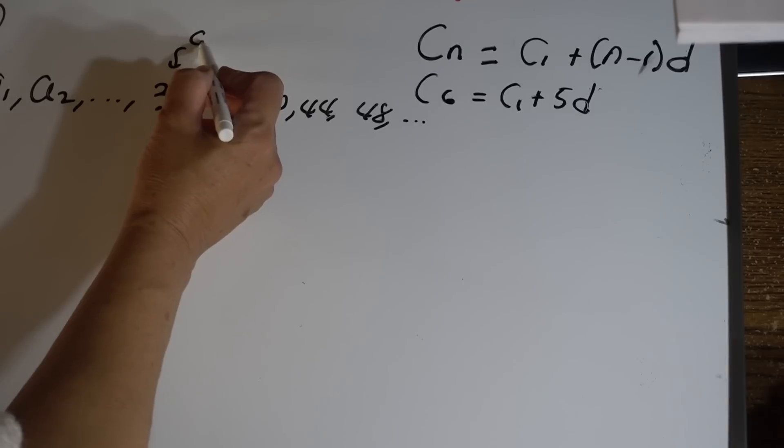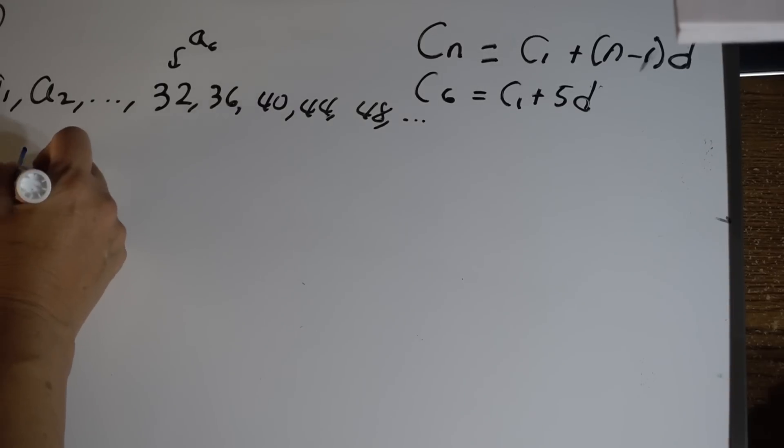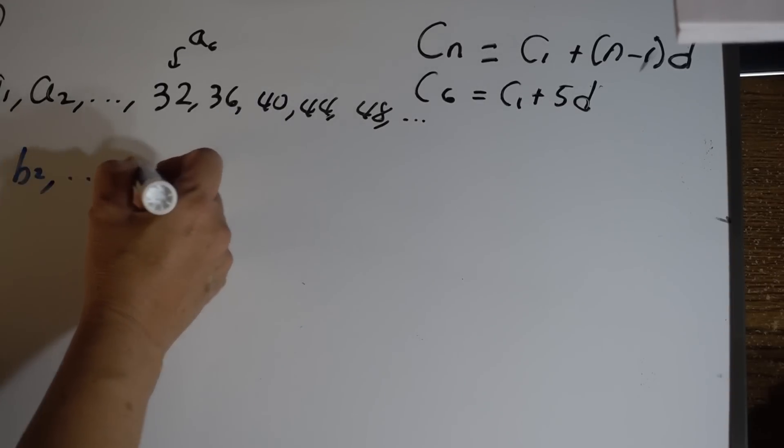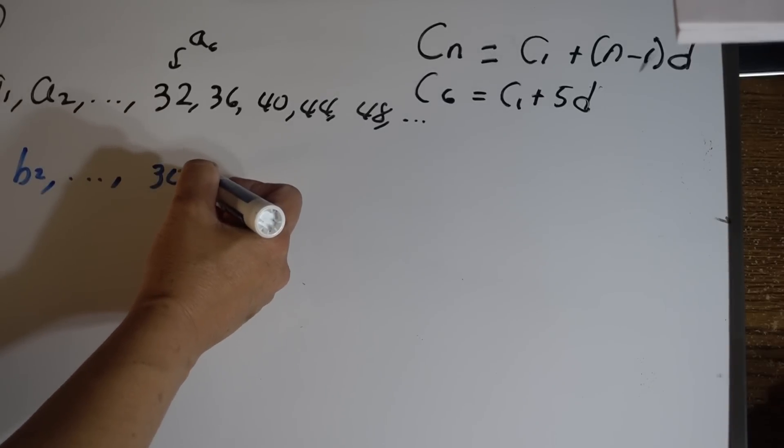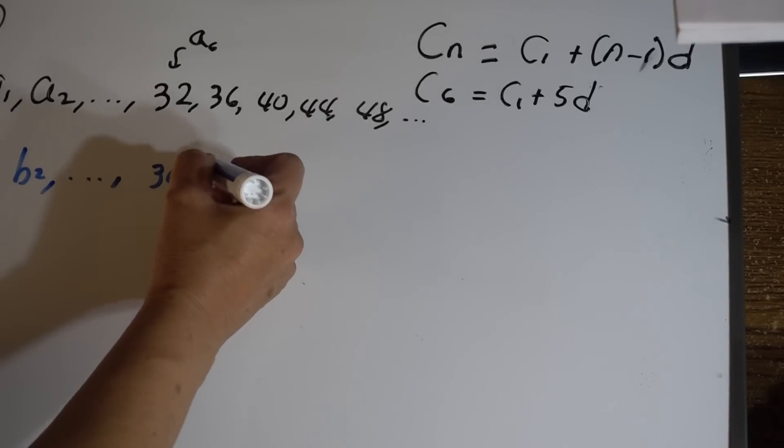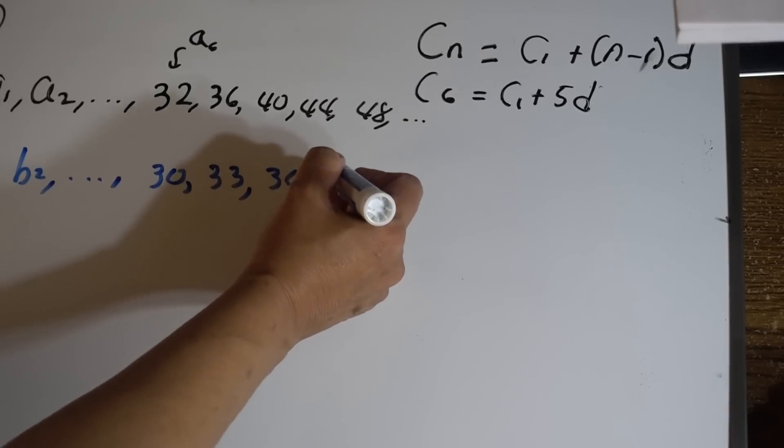Then we also have these b's. We don't know b_1, b_2, we don't know all this. The first one we know is b_6 is given and that's going to be 30, 33, 36, 39, and 42.